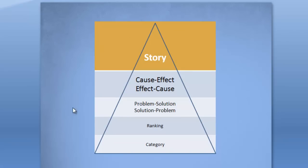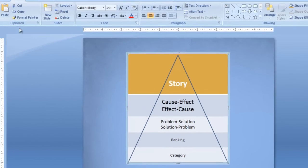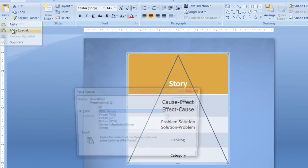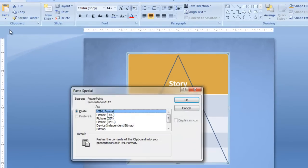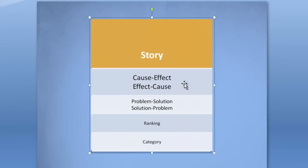How do you get rid of this stuff on the outside? So you go ahead and copy it, and then you paste it. Paste Special — and you're going to paste it as a PNG file, a GIF, or a JPEG. I'm going to go ahead and do a PNG file.